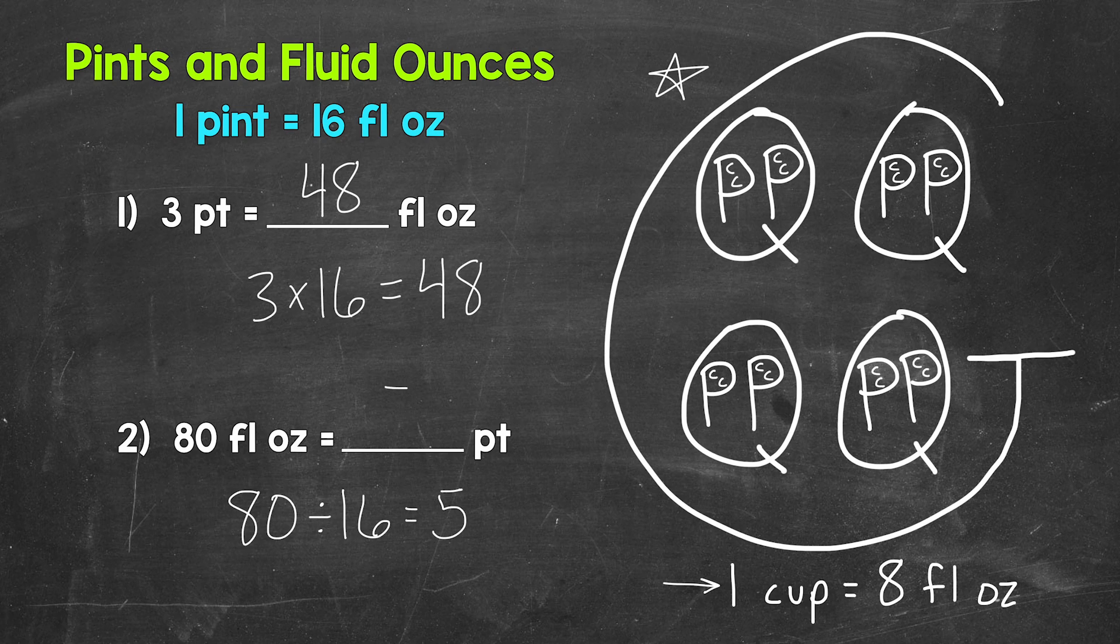80 divided by 16 gives us five. 80 fluid ounces equals five pints. So again, fluid ounces to pints, we divide by 16.